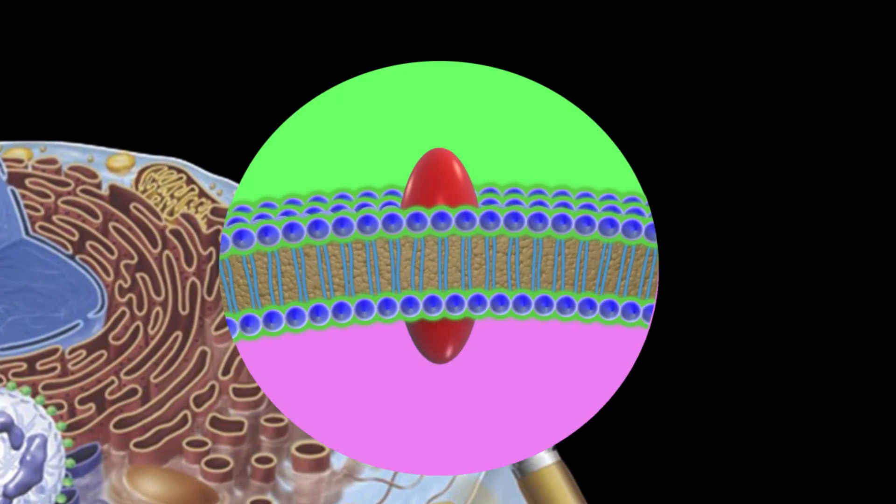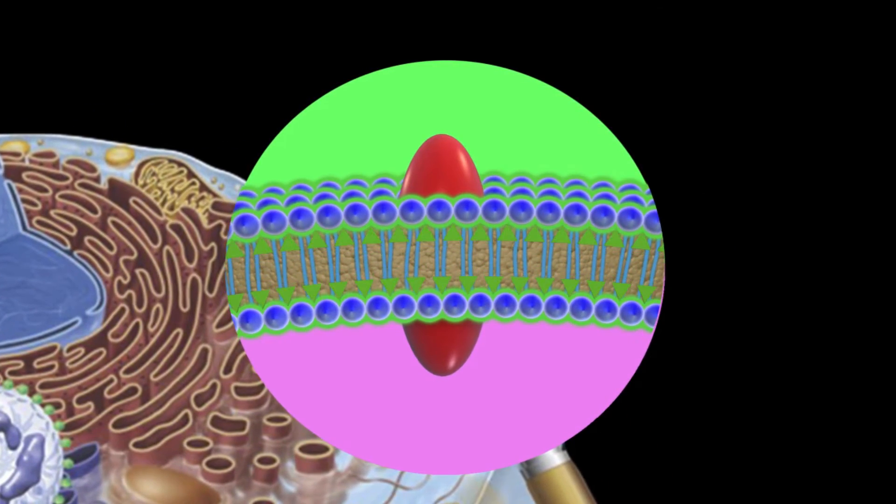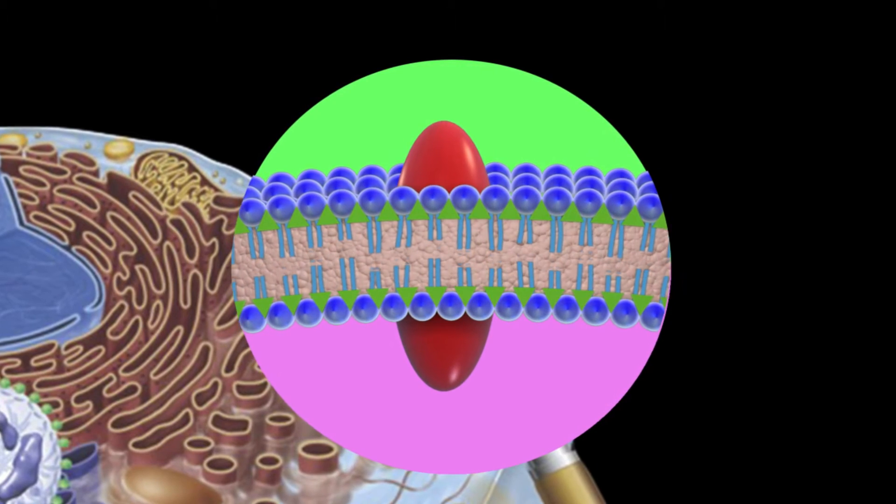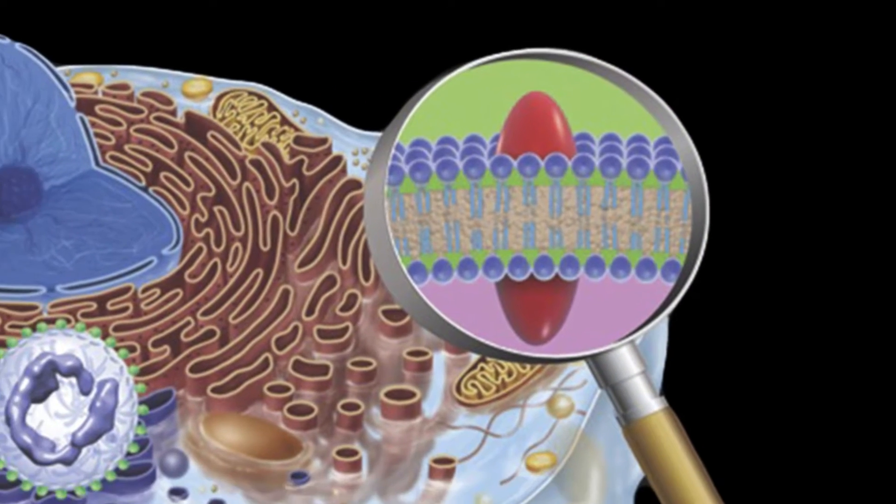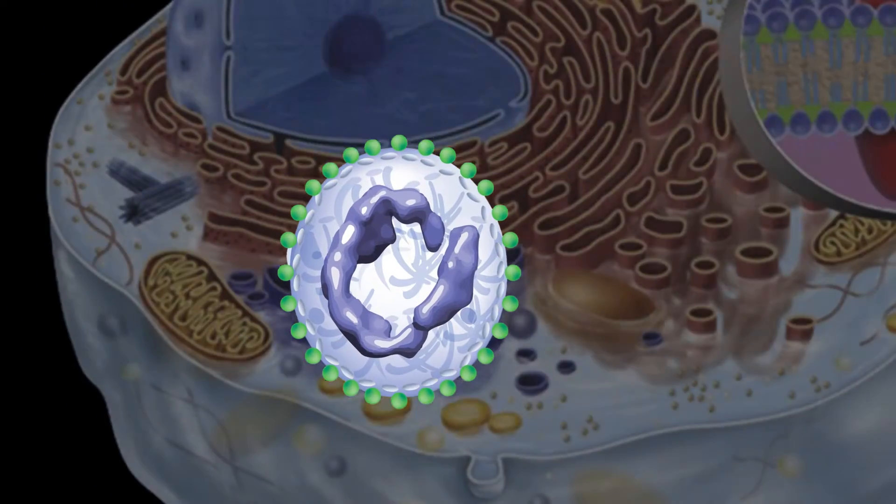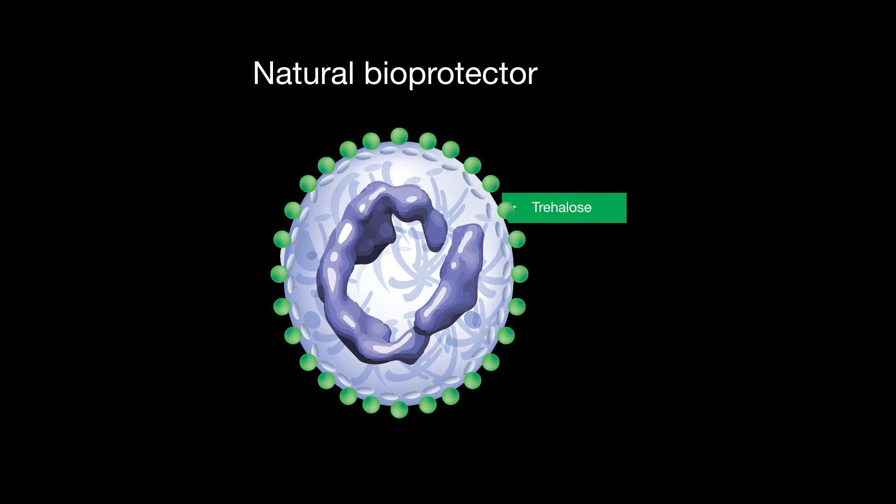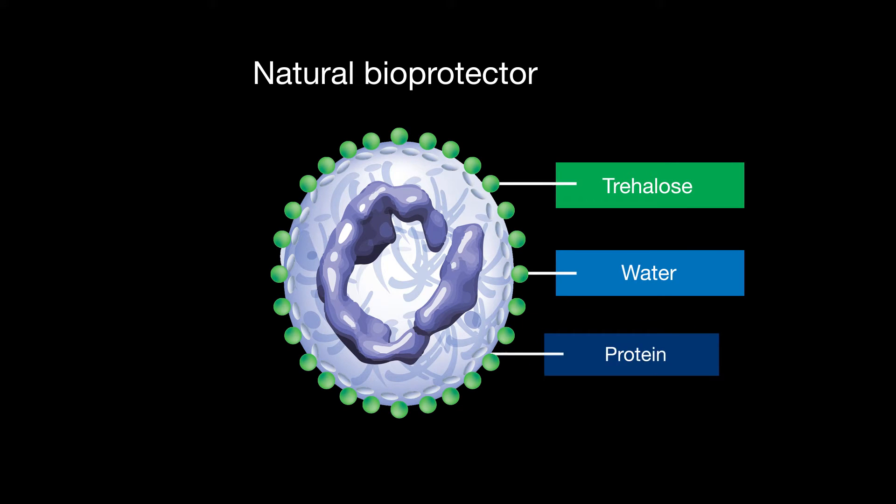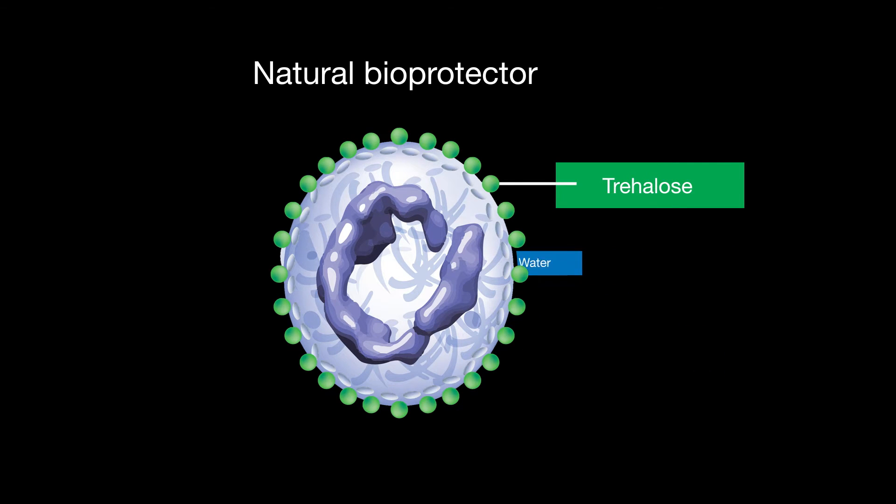It also stabilizes the lipid bilayers in the cell membrane, providing further protection to water loss from the cell. Additionally, it is known to aggregate around and alongside proteins in such a way as to stabilize and prevent denaturation of the proteins, thereby protecting cell function from the effects of desiccation.